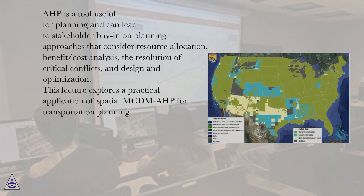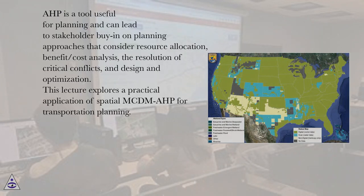AHB is a tool useful for planning and can lead to stakeholder buy-in on planning approaches that consider resource allocation, benefit/cost analysis, the resolution of critical conflicts, and design and optimization.